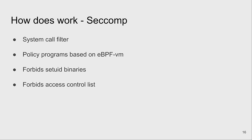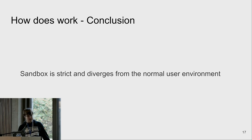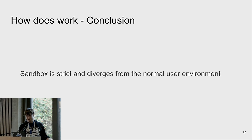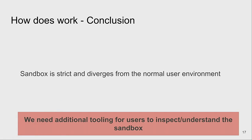There's also seccomp for completeness — this is a system call filter. Since we already have a very restrictive unprivileged user running there with no new privileges, we don't need to do much. It only forbids creating setuid binaries and forbids access control lists because we can't support those consistently across filesystems. The build sandbox is strict in what it allows, and it sometimes diverges from the normal user environment.